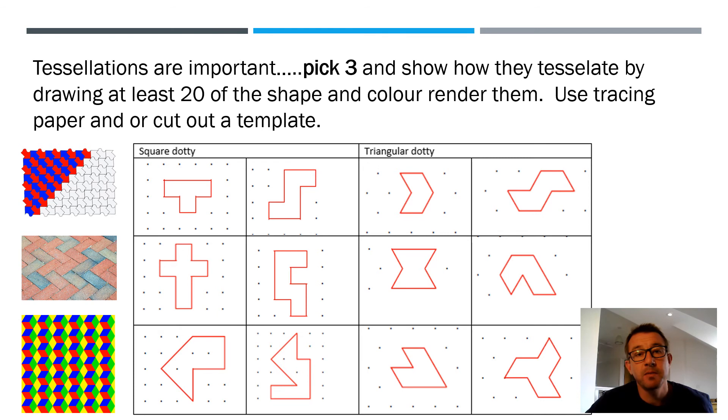So your next area to focus on is about nesting, and then perhaps tessellations. They're important, tessellations about how objects can fit into one another, how they can actually join to one another. And I want you on this particular slide to pick three, and show how they tessellate by drawing 20 of each shape, and color render them. You can use some fillings and rendering to practice that as well. If you've got tracing paper, great, use that. You can use squared dotted paper, and you've got six which are normal square dots, and you've got six that are actual triangular dotted, we call it isometric dots.